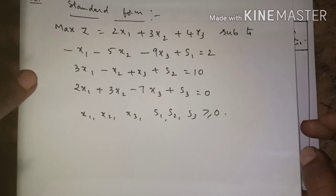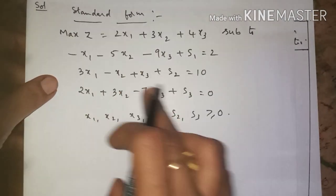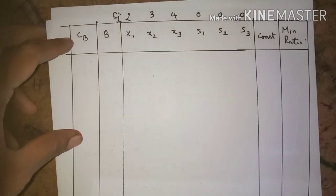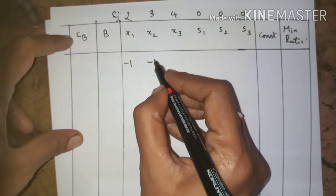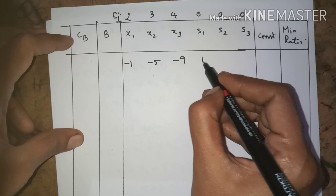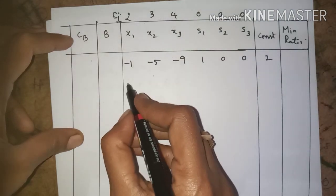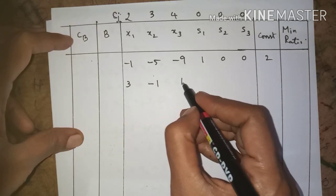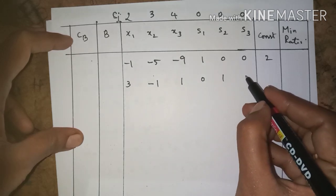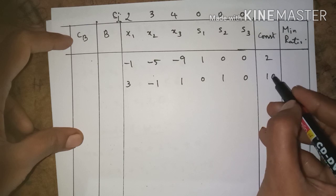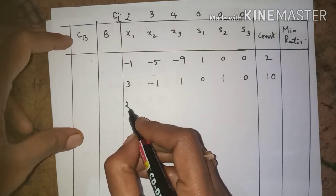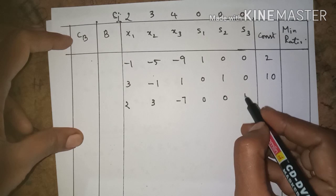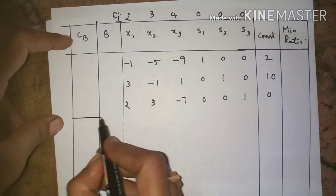We fill the body of the simplex table using the constraint coefficients. The first constraint has x1 coefficient -1, x2 coefficient -5, x3 coefficient -9, s1 = 1, s2 = 0, s3 = 0, constant = 2. The second constraint has x1 = 3, x2 = -1, x3 = 1, s1 = 0, s2 = 1, s3 = 0, constant = 10. The third constraint has x1 = 2, x2 = 3, x3 = -7, s1 = 0, s2 = 0, s3 = 1, constant = 0.